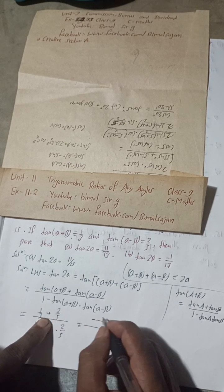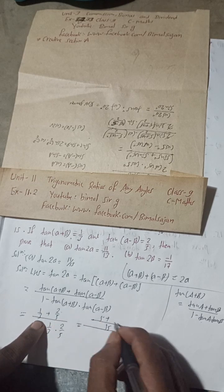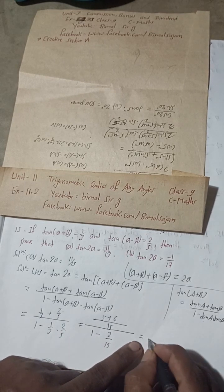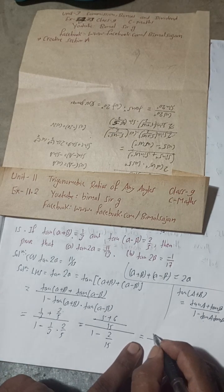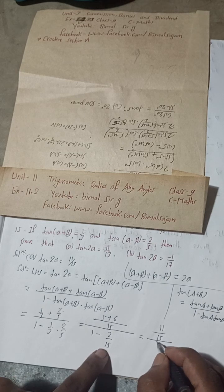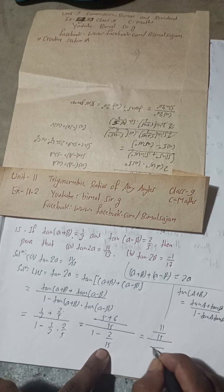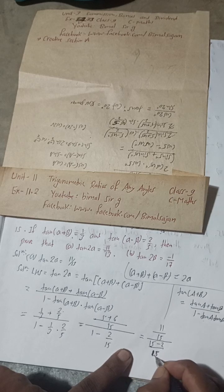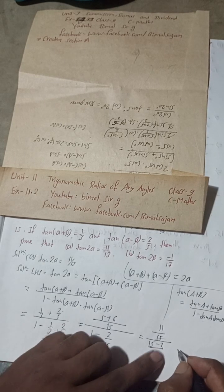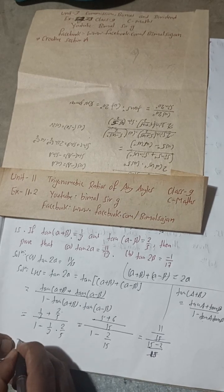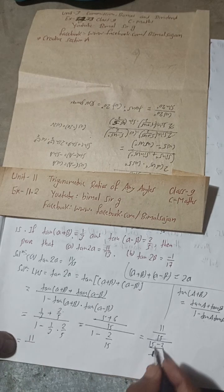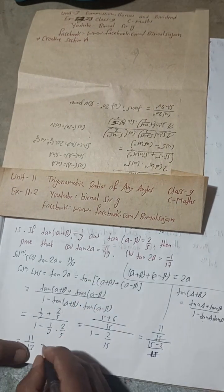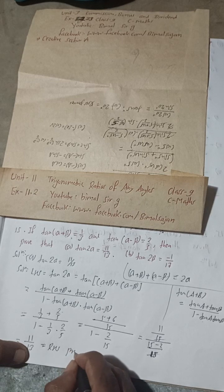The LCM of 3 and 5 is 15. Numerator: (5×1 + 3×2)/15 = (5+6)/15 = 11/15. Denominator: 1 − 2/15 = (15−2)/15 = 13/15. Therefore: (11/15) ÷ (13/15) = 11/13. LHS = 11/13 = RHS. Proved.